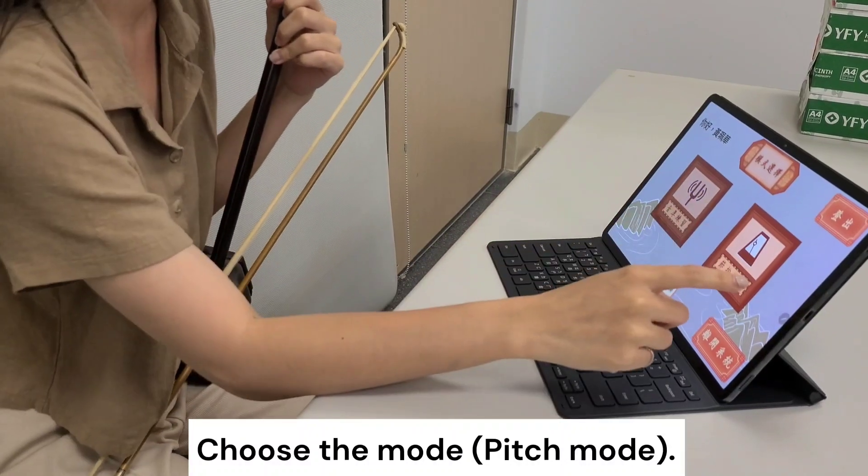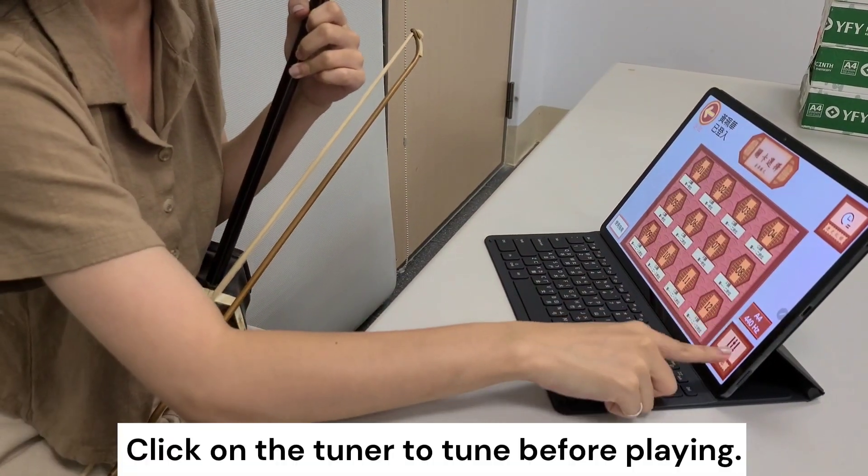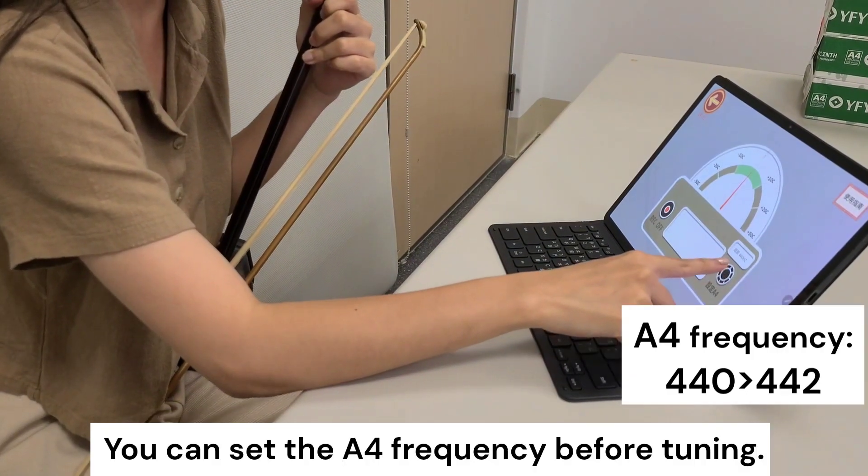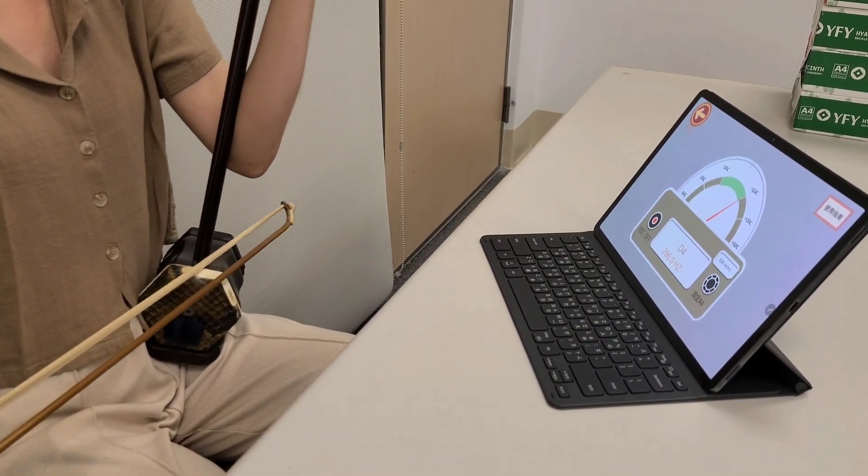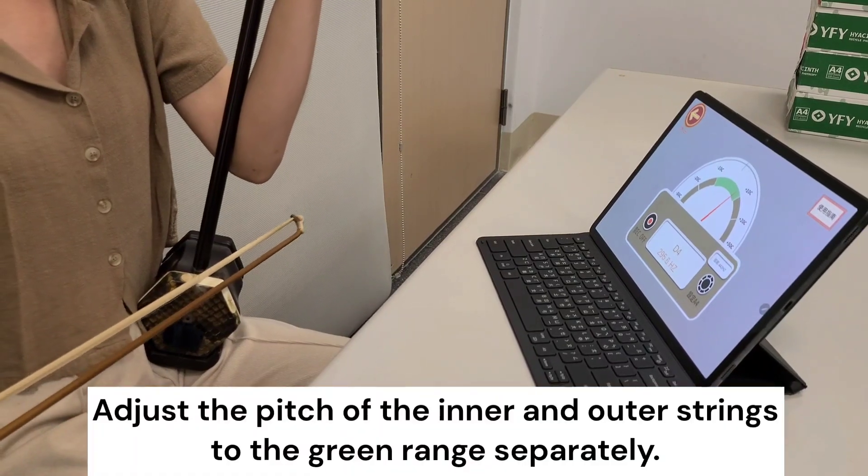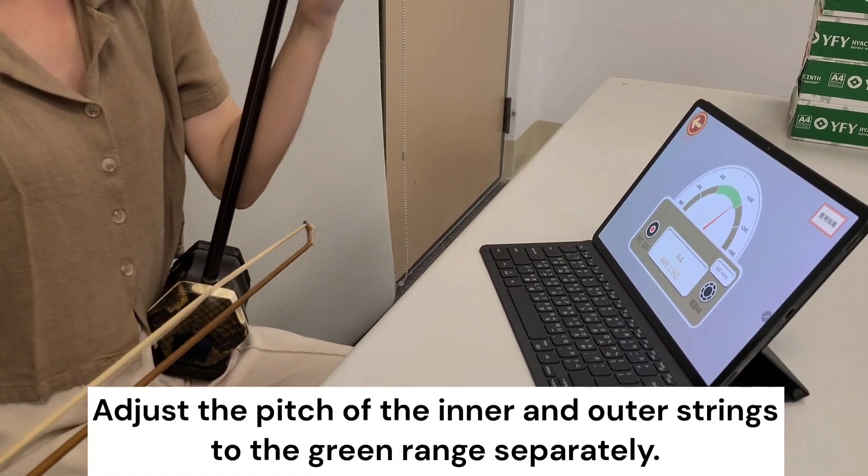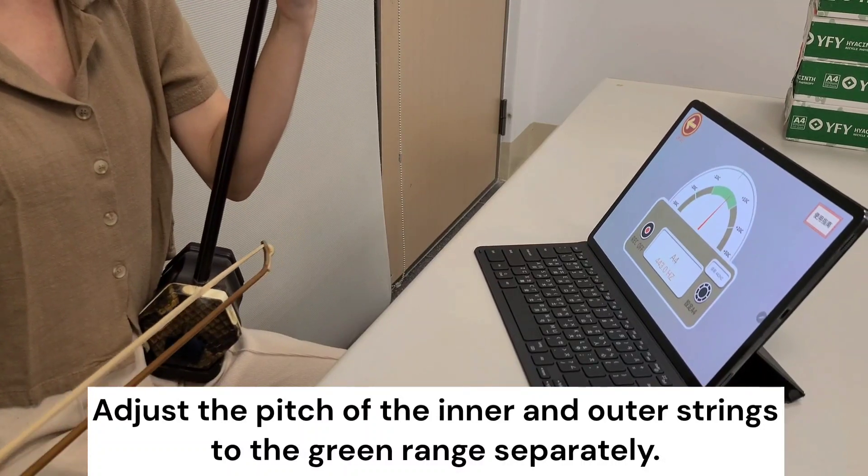Choose the mode. Click on the tuner to tune before playing. You can set the A4 frequency before tuning. Adjust the pitch of the inner and outer strings to the green range separately.